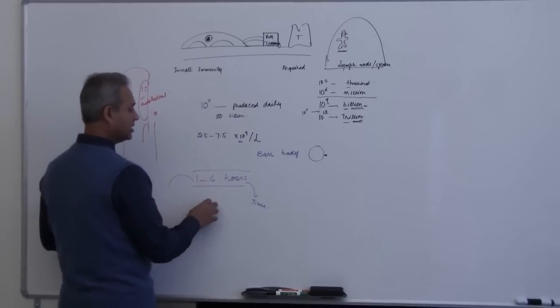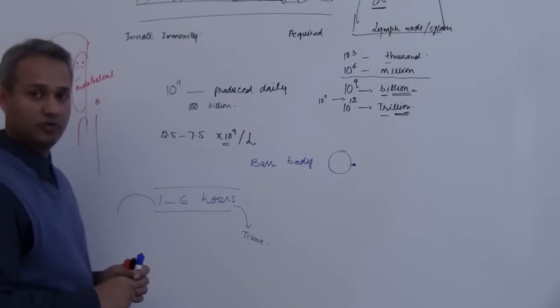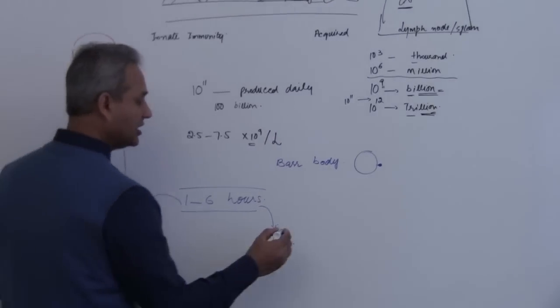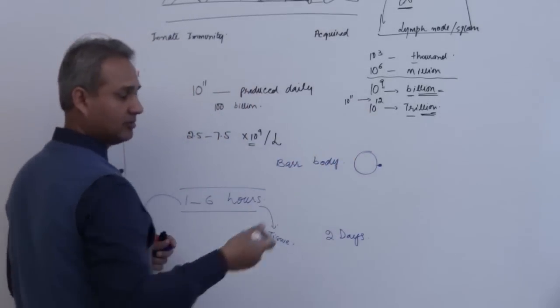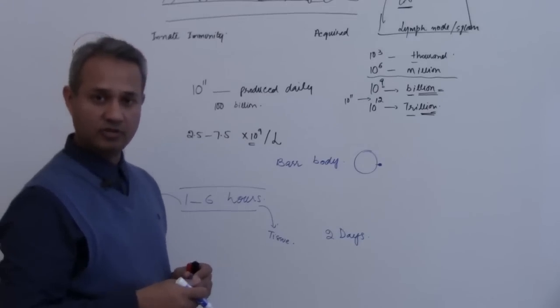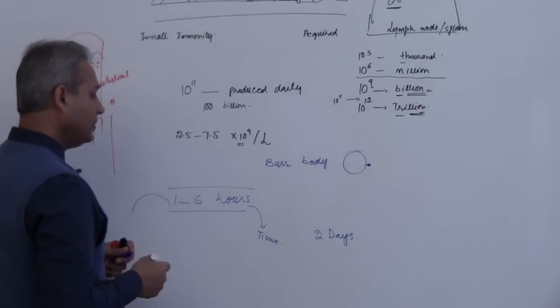So one to six hours they stay in the blood, then they jump out and they go in the tissue. In the tissue, they can live up to two days and then they are eaten up. We just talked about this, how would they be cleared out? They would die.